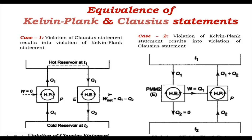Why is the Clausius statement violated? Because here there is a heat pump which is operating without any work input. The Clausius statement says that this is not possible, but we are assuming on the contrary that this is a heat pump which is pumping heat Q1 from a lower temperature reservoir to a higher temperature reservoir without any work input. Because the work is zero, the heat pumped is Q1 and this has to be Q1. We also consider a case where there is an engine which obeys the Kelvin-Planck statement — an engine taking certain heat, rejecting certain heat, with the difference converted to work W = Q1 − Q2.